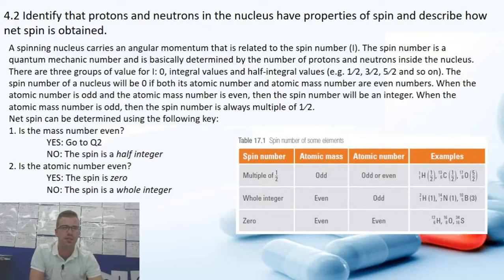4.2. Identify that protons and neutrons in a nucleus have the properties of spin and describe how net spin is obtained.